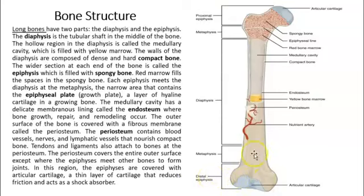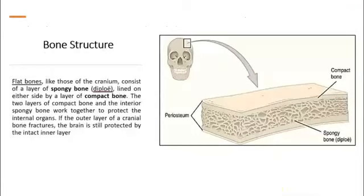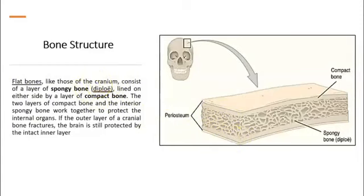Bones also have different layers. The outside of the bone is called the periosteum, and the inside is called the endosteum. At the top you have an epiphyseal plate, which is the area where the bone grows in length. Similarly, flat bones have compact bone on the outside, spongy bone in the middle — also called diploe — and compact bone again at the bottom.